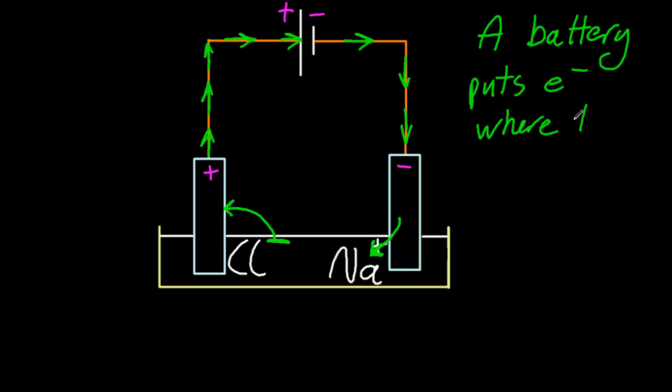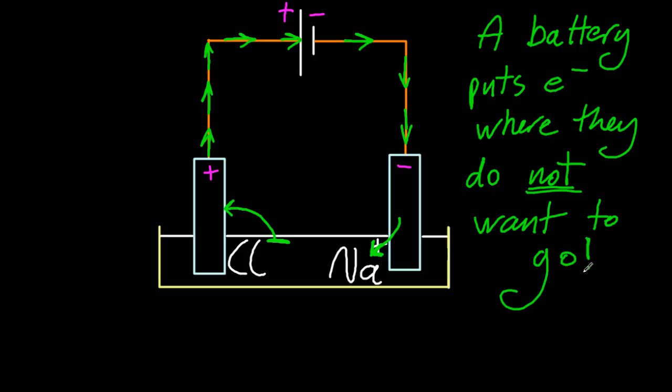So the battery at the top, the power supply, puts electrons where they don't want to go. That electron doesn't want to go around to the negative electrode, but it's forced to by the battery at the top there.